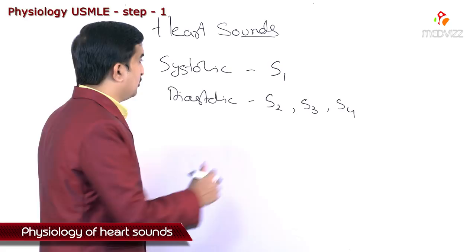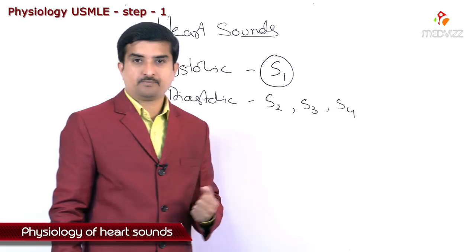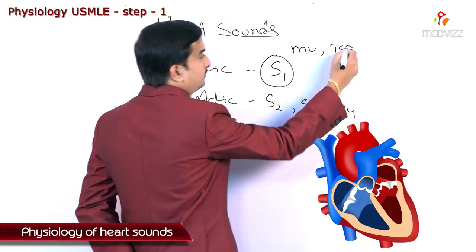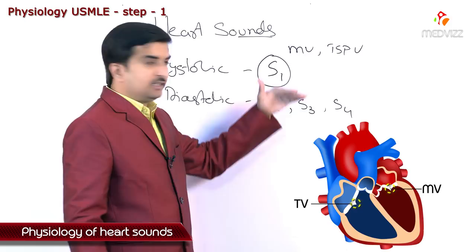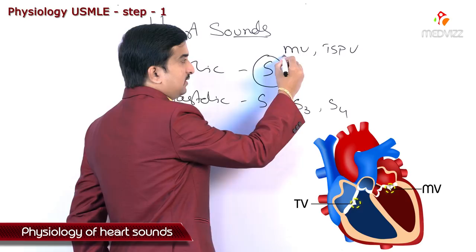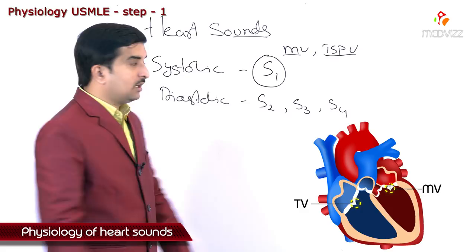Now let us discuss individual heart sounds in detail. The first heart sound, S1, is the systolic sound. It is mainly produced because of the closure of the mitral valve and the tricuspid valve, and it is mainly caused by vibrating turbulence of the blood as well as the ventricular walls.